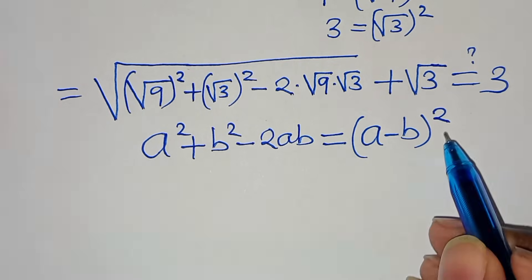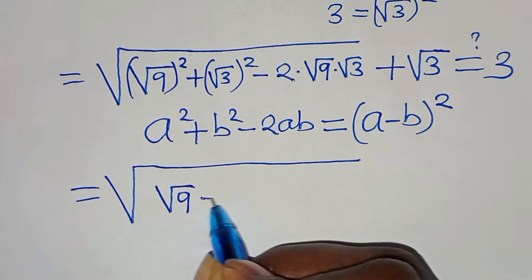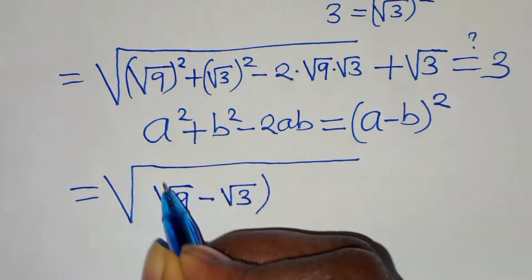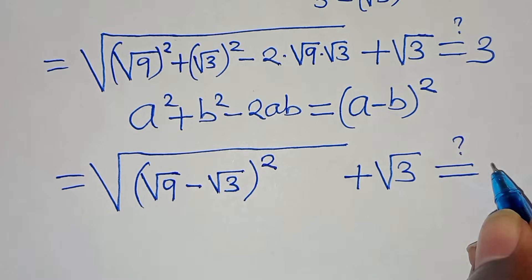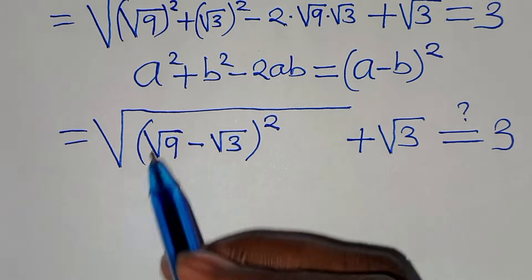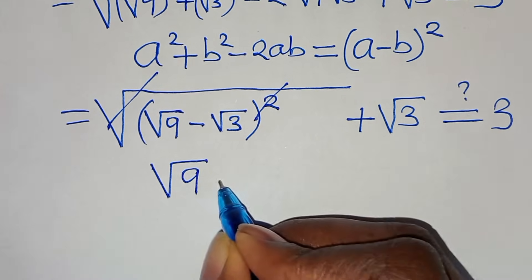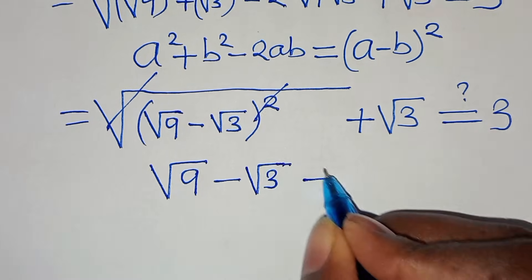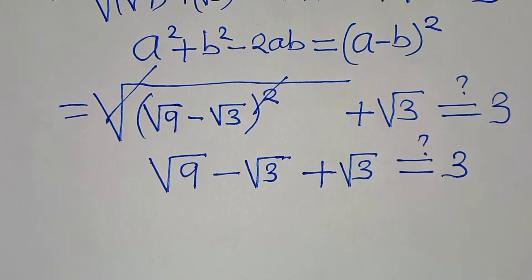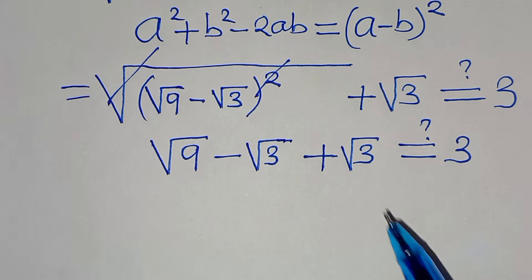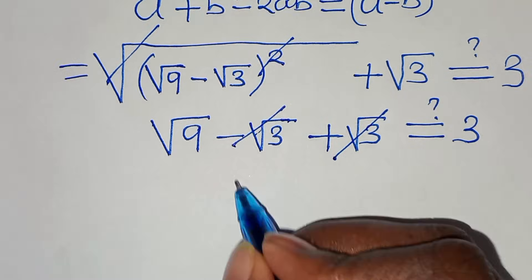Applying this algebraic identity, we have the square root of (square root of 9 minus square root of 3) squared, plus square root of 3, which should equal 3. Eliminating the square root sign gives us square root of 9 minus square root of 3 plus square root of 3. The minus square root of 3 and plus square root of 3 cancel, leaving square root of 9.